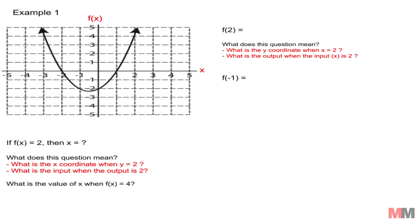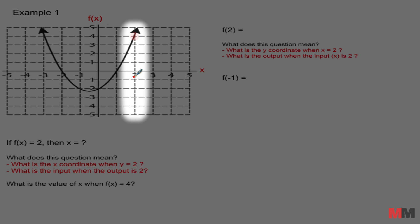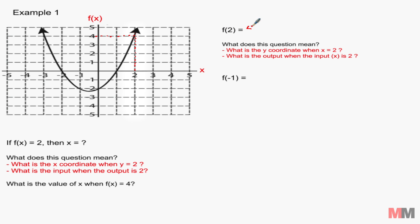All you have to do is scan through the x axis until you get to x equals 2, and then you want to scan where the graph is. So the graph is right above and then you just have to read the y value. f of 2 equals 4. So let's try that again.